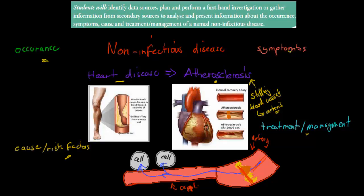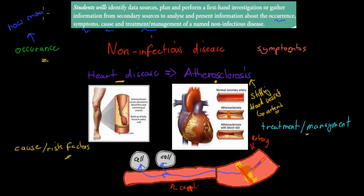This is what atherosclerosis is — it's a form of heart disease. What we have to specifically talk about is the occurrence, symptoms, cause or risk factors, and the treatment and management of heart disease. Occurrence just means how often or how many people have the disease — is it a likely killer, how many people have it in Australia and other parts of the world. Symptoms is what you feel when you have the disease.